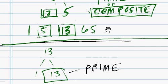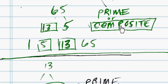Just to be clear, 5 and 13 are both prime numbers, but 65 is a composite number.